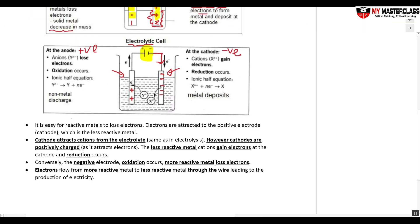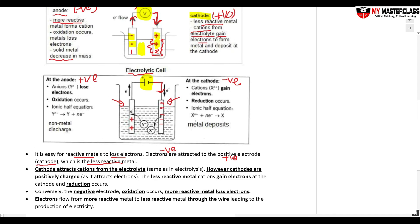Recap for your simple cells: it is easy for reactive metals to lose electrons. Electrons, because they are negative, are attracted to the positive plate, which is the less reactive metal. This positive plate, because they gain electrons — reduction is gain — and then red cat. So this electrode is your cathode. The cathode attracts the cations from the electrolyte. There will be ions floating in the electrolyte, and these cations get attracted to the cathode. The positive ions gain the electrons.